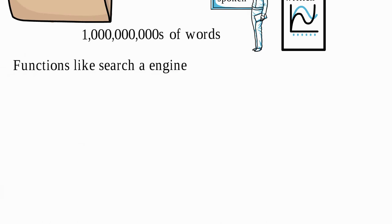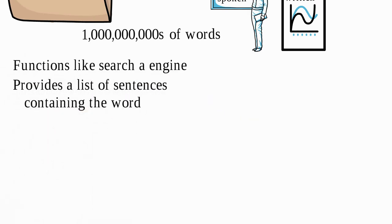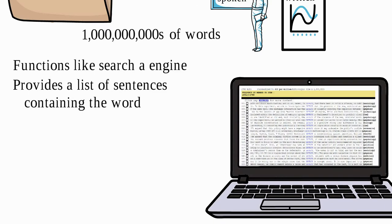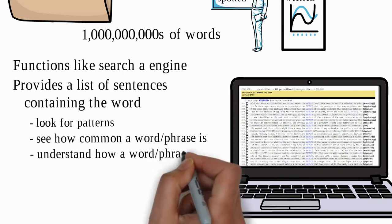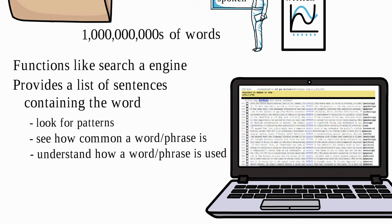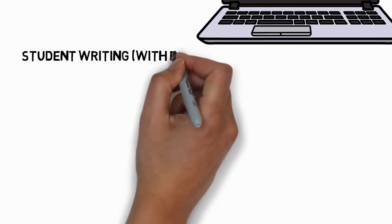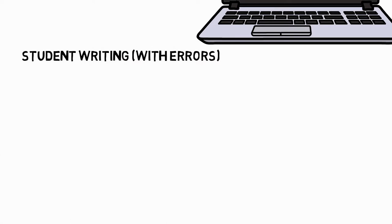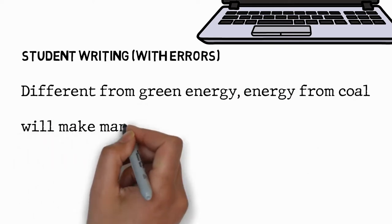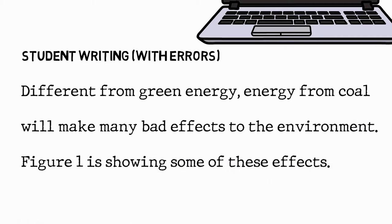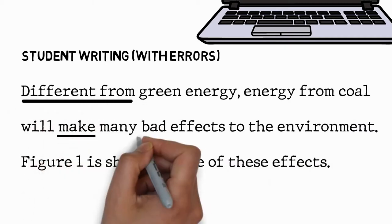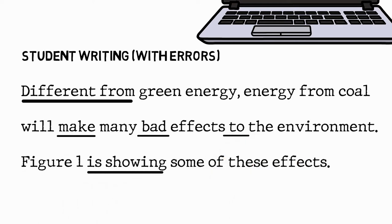A concordancer functions very much like a search engine, but instead of a list of websites, it provides a list of sentences containing the search word. This is useful in order for you to look for patterns, to see how common a word or phrase is, and to understand how a word or phrase is used. This video is going to be very practical, so I'm going to show you how to improve writing using concordances. We're going to start with this short example of a student piece of writing, with some errors: 'Different from green energy, energy from coal will make many bad effects to the environment. Figure 1 is showing some of these effects.' The errors here are 'different from', 'make', 'bad', 'to', and 'is showing'.